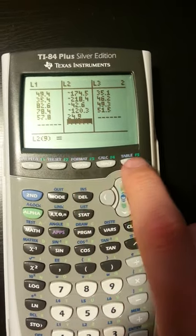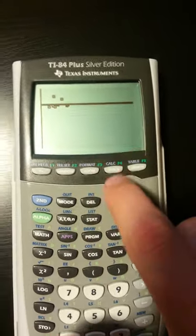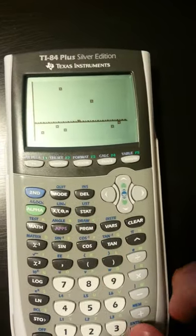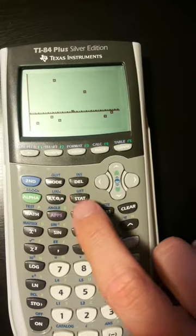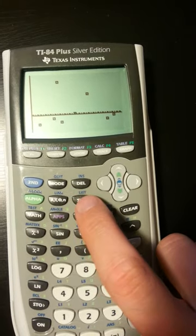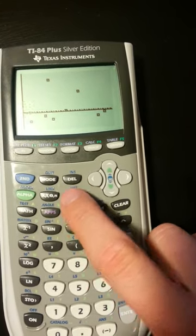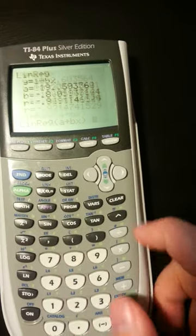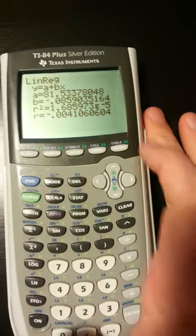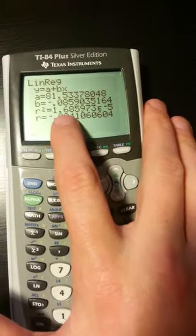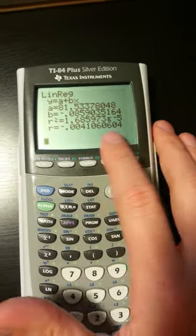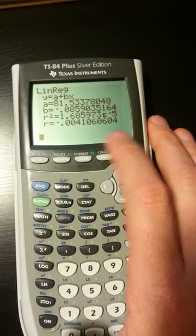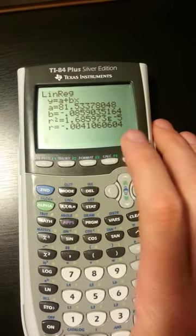Now when I look at the graph, it's gone. I do a zoom nine and see the data. It's pretty scattered, but to get the correlation coefficient, stat, calc, eight, enter. There's our new correlation. Look how small it is - close to 0.004. That outlier was definitely very influential with the correlation.